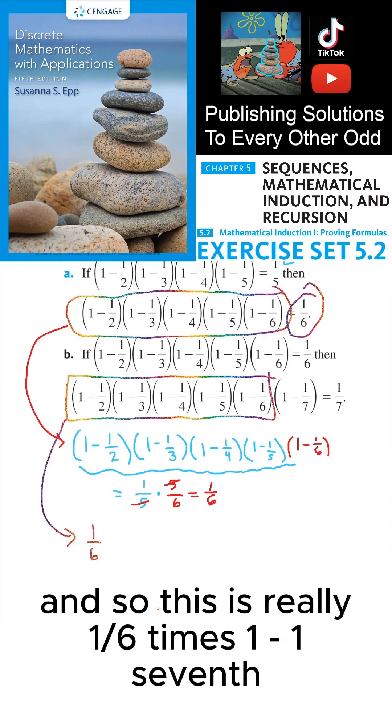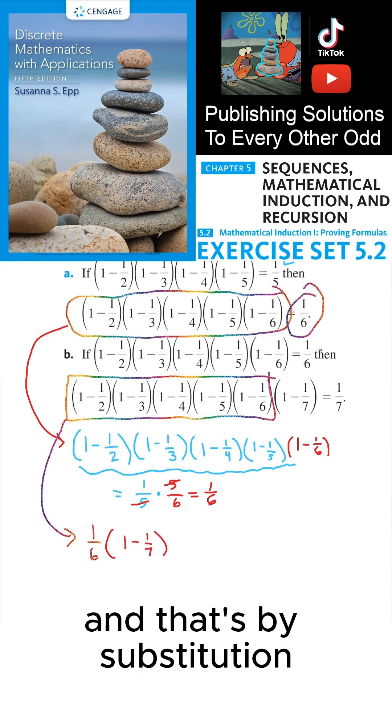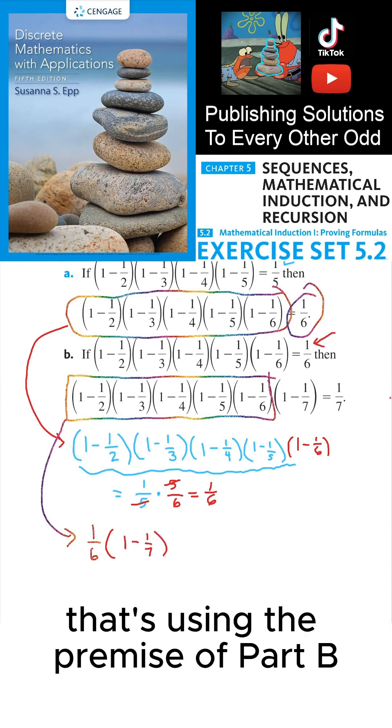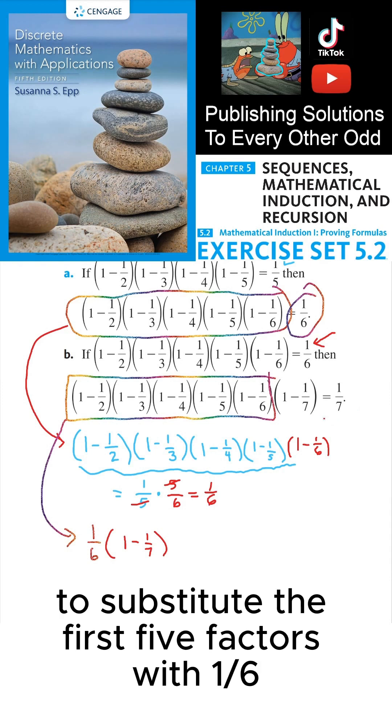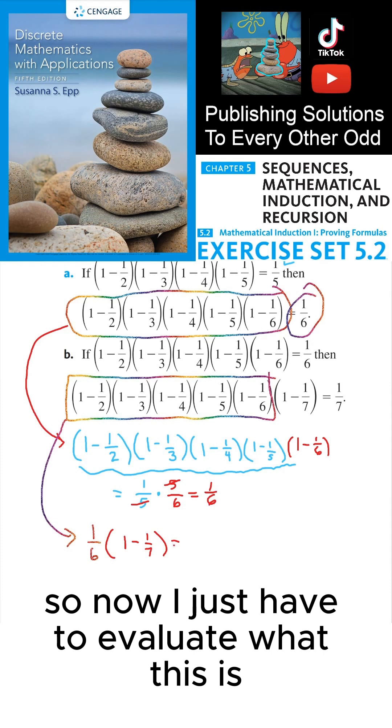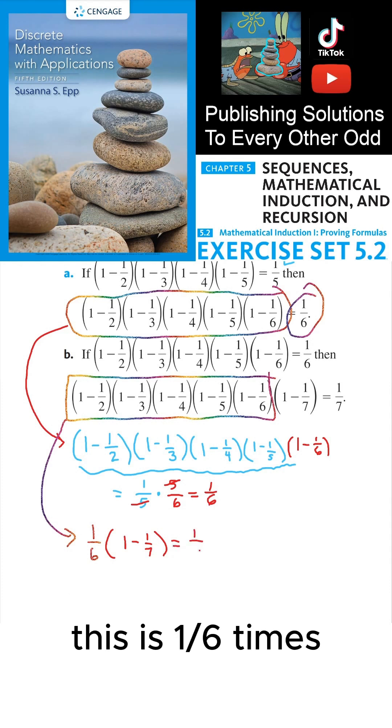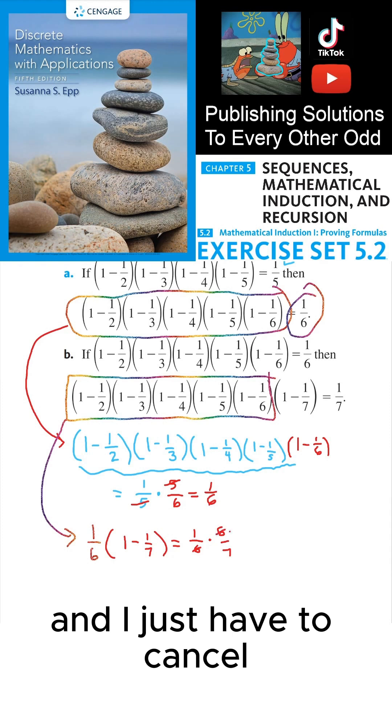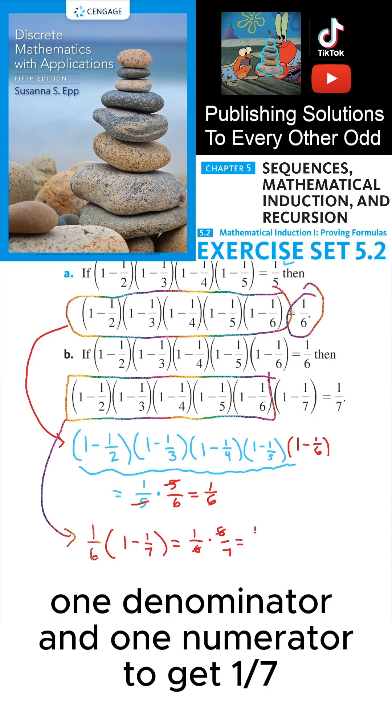And so this is really 1/6 times (1 minus 1/7). And that's by substitution. That's using the premise of part B to substitute the first five factors with 1/6. So now I just have to evaluate what this is. This is 1/6 times 6/7. And I just have to cancel one denominator and one numerator to get 1/7.